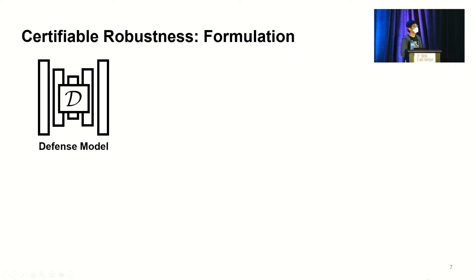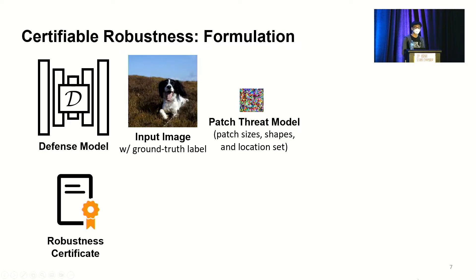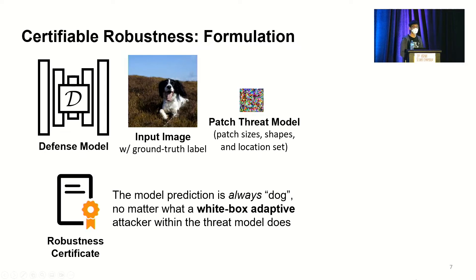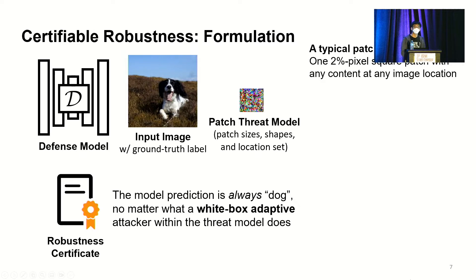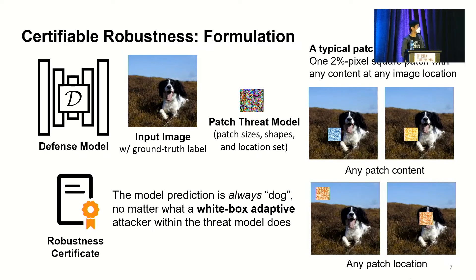The idea is that given a defense model, an input image, and a threat model, we want to generate a robustness certificate which says the model prediction is always correct no matter what a white-box adaptive attacker within the threat model does. White-box adaptive means the attacker knows everything about the defense — including the algorithm, parameters, model weights, and architecture. A typical threat model is one square patch taking 2% of image pixels, with any content, placed at any image location. The certificate accounts for all attack scenarios.